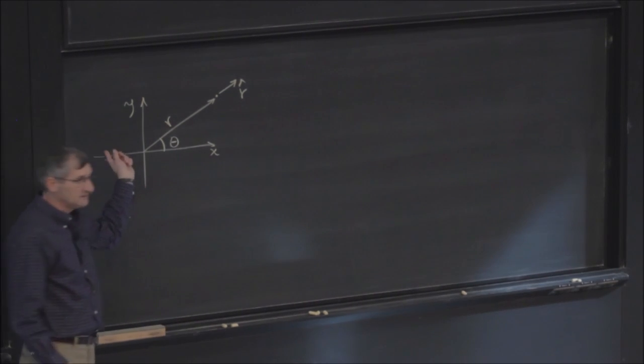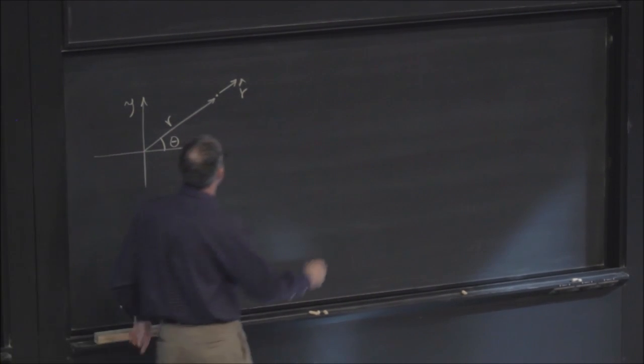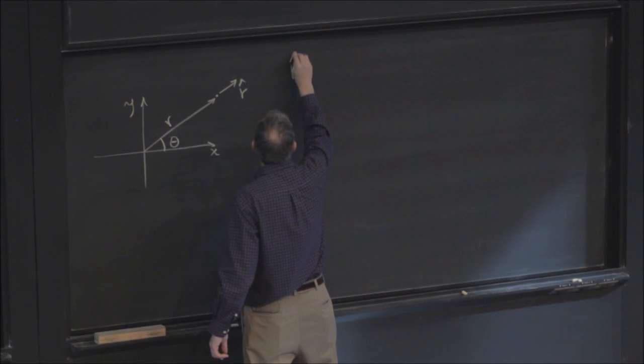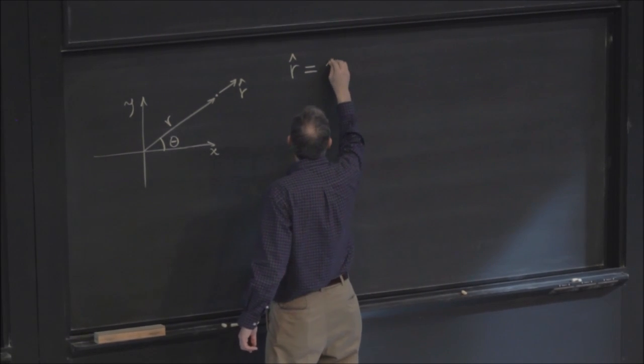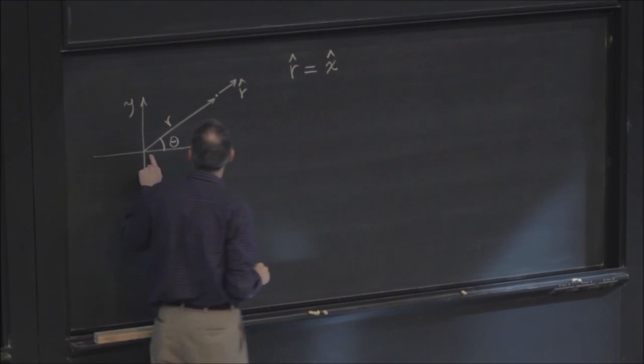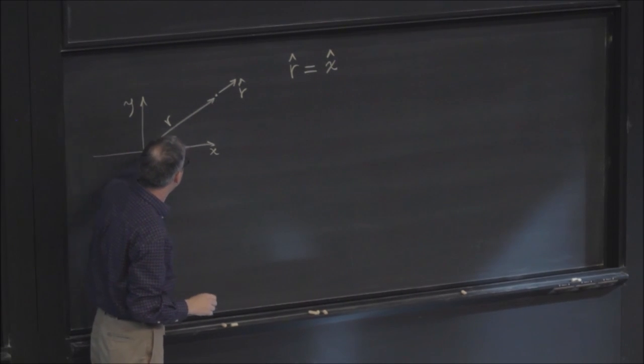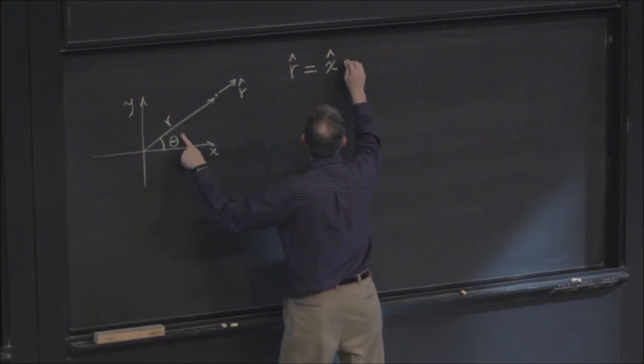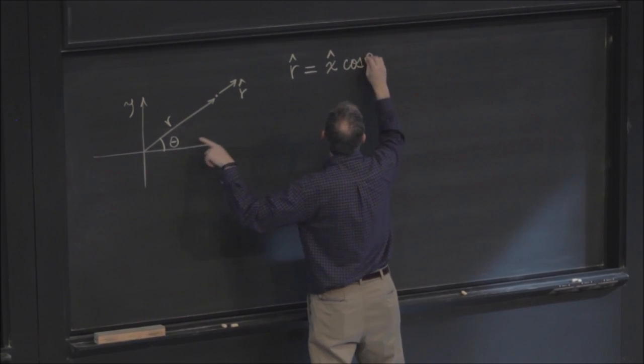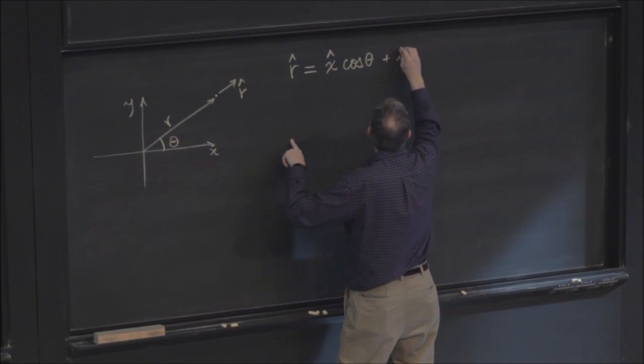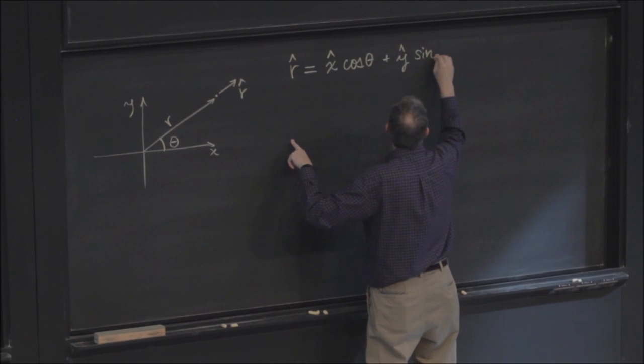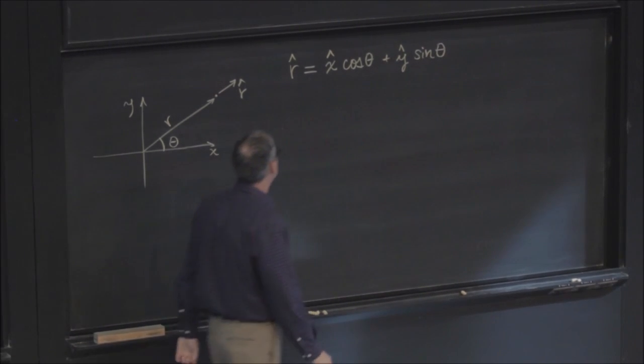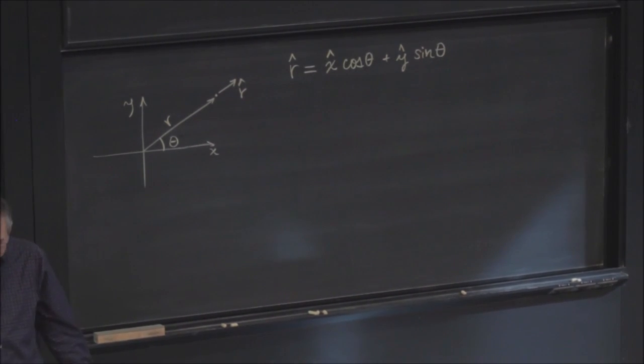Using the Cartesian representation, I could say that r hat is equal to x hat times the component in the x direction, which is going to be cosine of theta, plus y hat times the y component, which is going to be sine theta. It has unit length, so I got the lengths right, because cosine squared plus sine squared is 1.